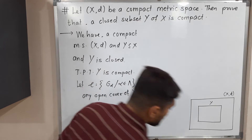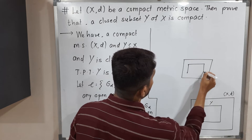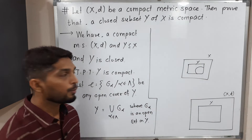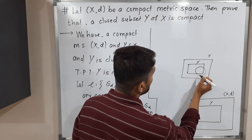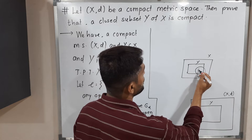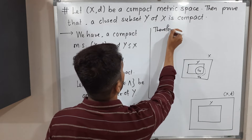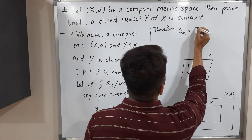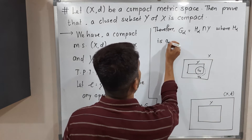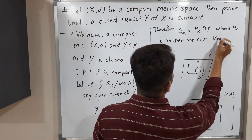The last few words are very important. G_alpha is an open set in Y. What is the meaning of that? If you have a metric space X and a set Y which is a subset of X, suppose this is G_alpha — it is an open subset of Y. That means there is one set H_alpha, such that H_alpha is open in X, and the intersection of Y and H_alpha gives us G_alpha.